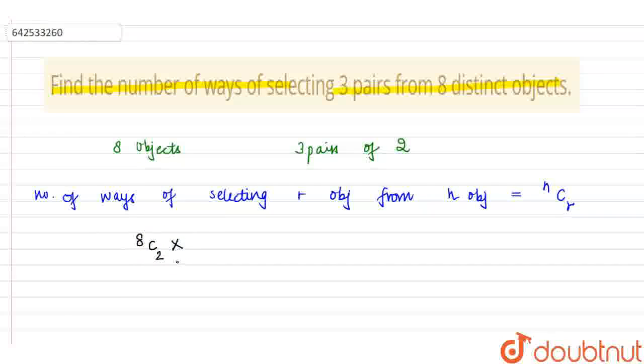Into, now out of 8, 2 are gone, we are left with 6. So out of 6, again 6C2 for the second pair into, we are left with 4. So 4 into 4C2 for the third pair.